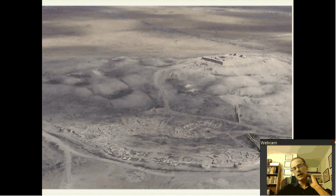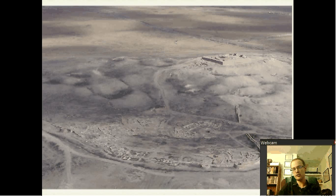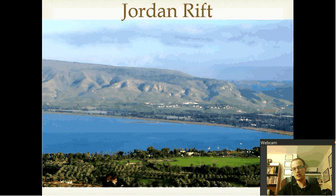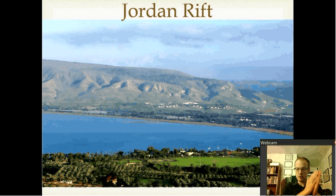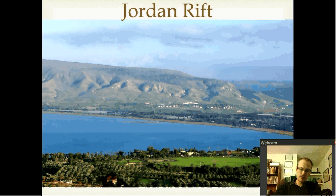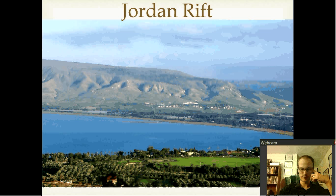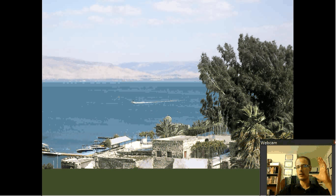As you get far enough south you get to what's called the Negev, which tends to be a little more desert-like and hilly. Going from west to east through the different geographical types in the land of Israel: coastal plain, central mountain range, and now the Jordan Rift, which has both the Dead Sea and the Sea of Galilee. You can see how it's green there with mountains on both the east and west.